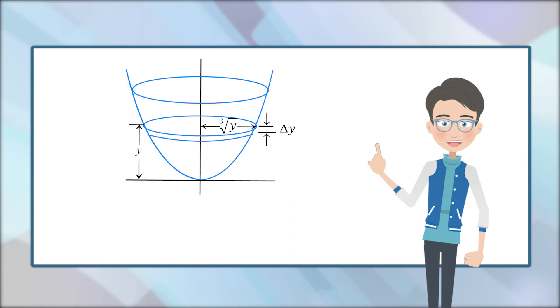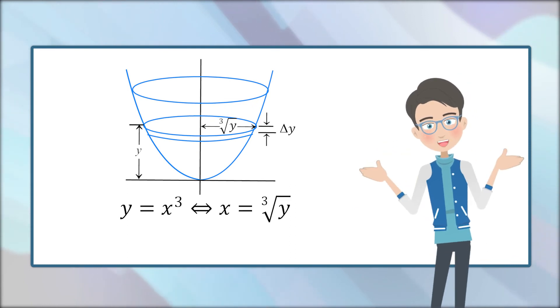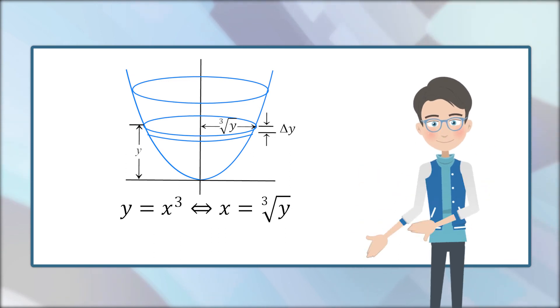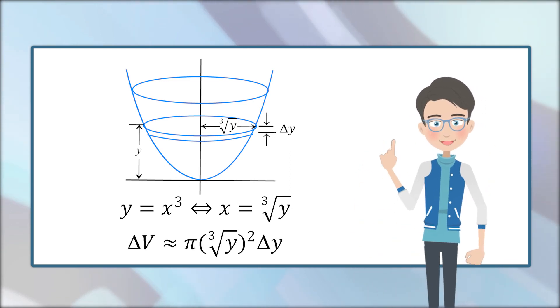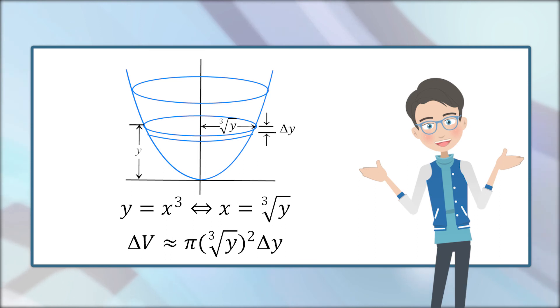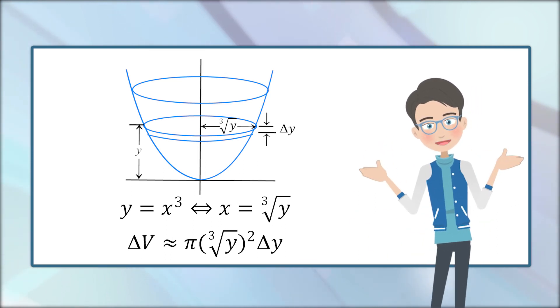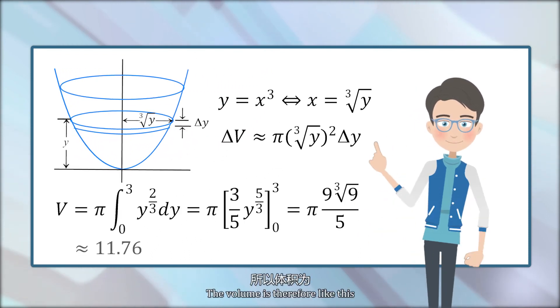Note that y equals x³ if and only if x equals the cube root of y, and ΔV approximately equals π times (∛y)² times Δy. The volume is therefore like this.